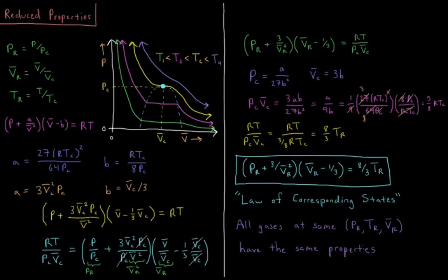This video will discuss the reduced properties of gases. In the previous video we looked at the critical points of gases: there is a certain temperature, pressure, and molar volume at which the first derivative of pressure with respect to molar volume is zero and the second derivative is also zero. That is called the critical point, and the pressure, molar volume, and temperature at which that occurs are called the critical pressure, critical molar volume, and critical temperature.